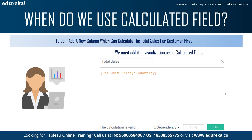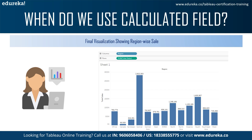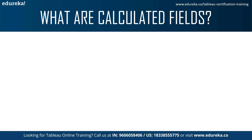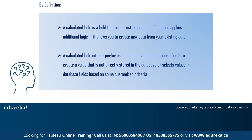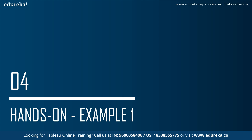Using a calculated field in Tableau, we can calculate any extra column or calculation that we require. Here we need total sales, which requires multiplying per unit price by quantity. We named the calculated field 'total sales' with that multiplication as the calculation. By definition, a calculated field either calculates database fields to produce a value not directly recorded in the database, or it selects values in database fields based on some customized criteria.